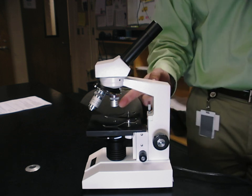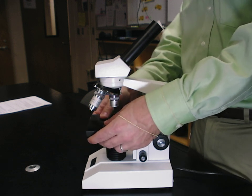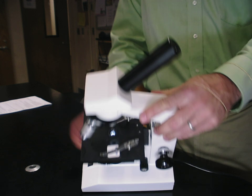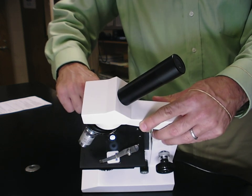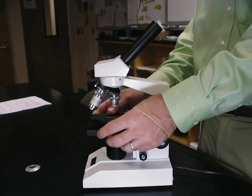You make sure that you are on focusing power or the scanning power. Then you slide the slide underneath the stage clips and you center it so that the piece of cork is right in the center. So the piece of cork is as centered as possible underneath the light.